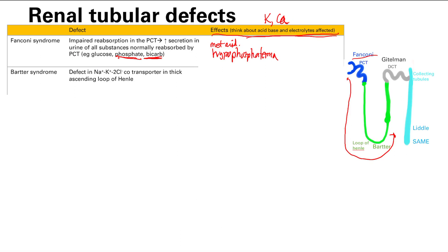Next is Bartter syndrome, which is a problem with the loop of Henle. The main transporter there is the sodium-potassium-2-chloride cotransporter. The easiest way to think about this is: what drug do we give that creates the same effect? If we give a loop diuretic, we block this transporter, so Bartter syndrome is going to look like the same thing — it will have the same side effects as loop diuretics.